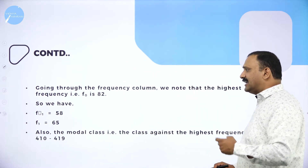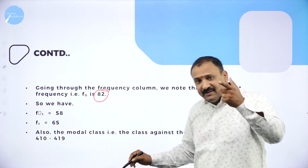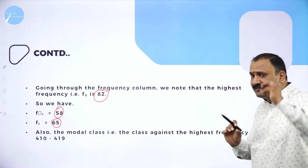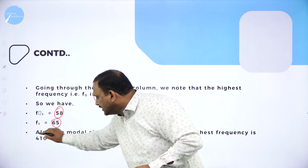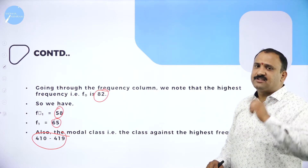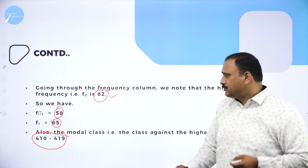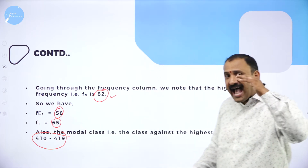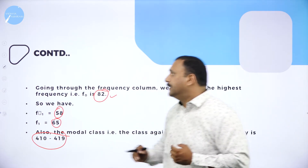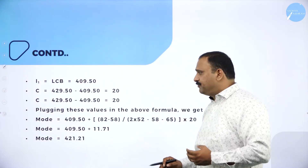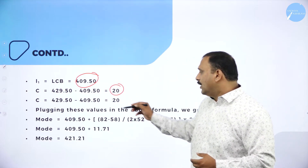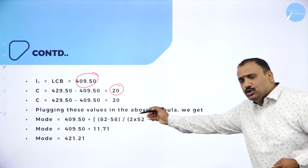Going through the frequency table, the highest frequency is 82. The previous frequency was 58 and the next was 65. The modal class — the interval corresponding to the highest frequency — is 410 to 419. So the modal class interval against the highest frequency ranges from 410 to 419. The lower boundary l1 is 409.50, and the class width c is 10.